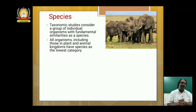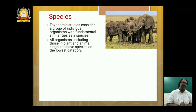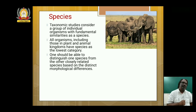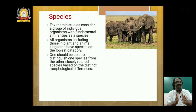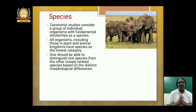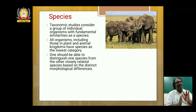In all the five kingdoms — Monera, Protista, Mycota, Plant and Animalia — in the hierarchy of classification, species is the lowest category. That's why we call it the basic unit of classification. One should be able to distinguish one species from another closely related species based on distinct morphological differences. I told you donkey is a different species, horse is a different species. By external appearance, we should be in a position to understand this is one species and that is another species.